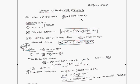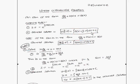How can you solve this type of equation? First, find the integrating factor. The integrating factor is e to the power of the integral of P(x) dx. Then the general solution is y times the integrating factor equals the integral of Q(x) times the integrating factor dx, plus c.